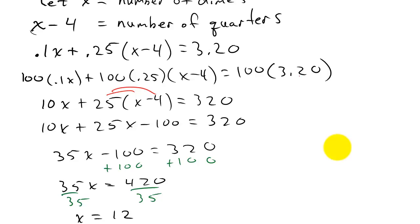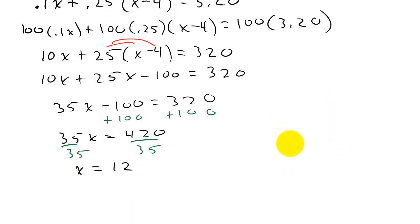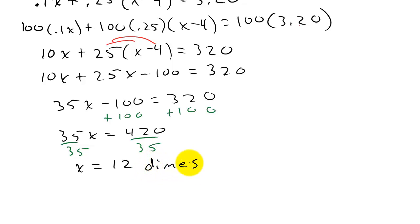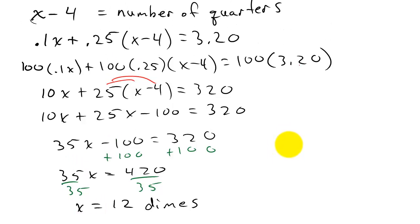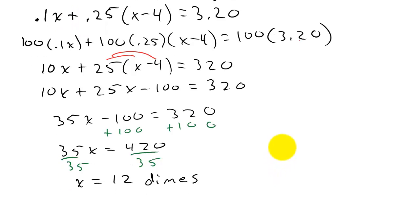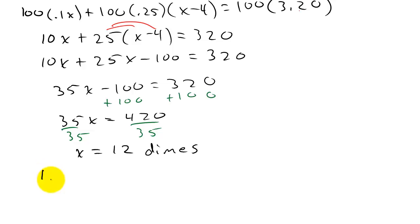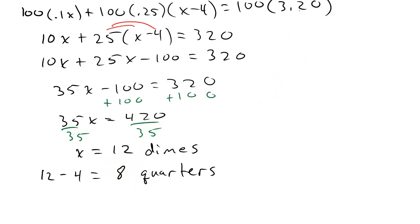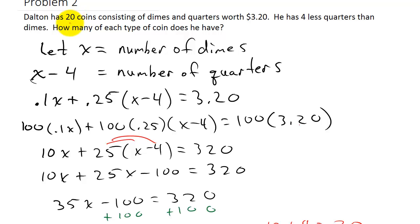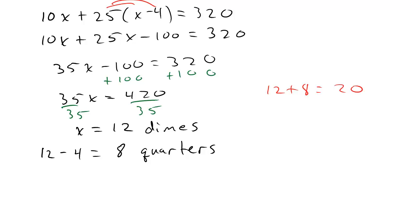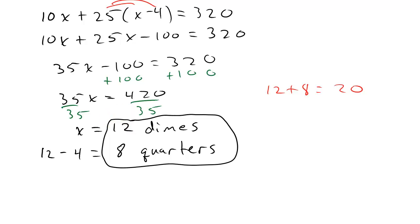So x equals 12, which is the number of dimes — 12 dimes. The number of quarters is x minus 4, which is 12 minus 4, equals 8 quarters. Notice that 12 plus 8 equals 20, which matches the total of 20 coins. So the answer is 12 dimes and 8 quarters. I hope this video helped — check out my other videos!